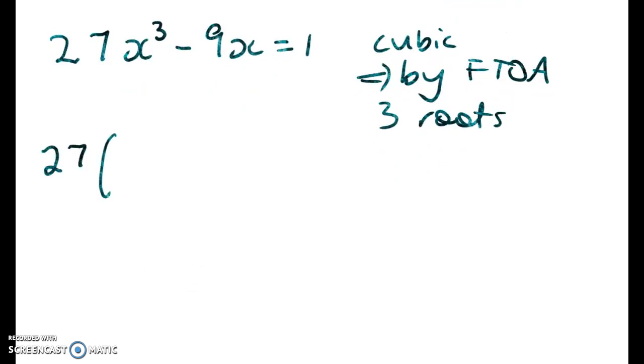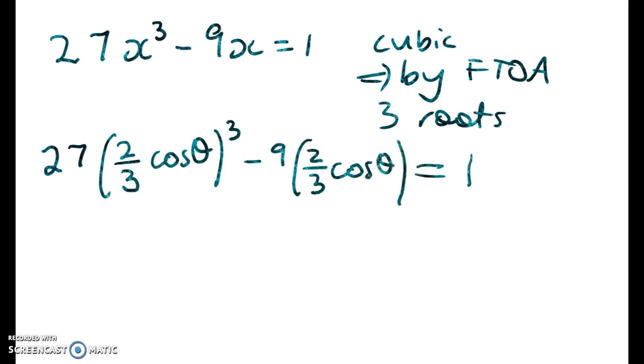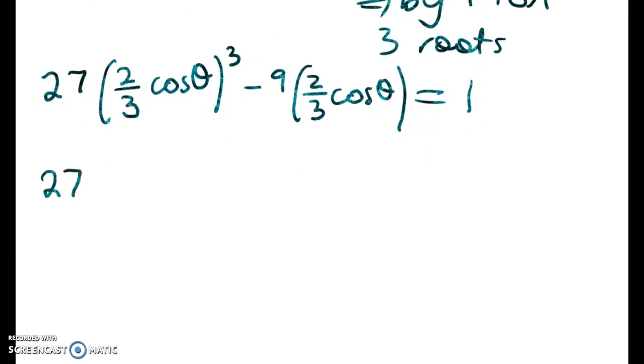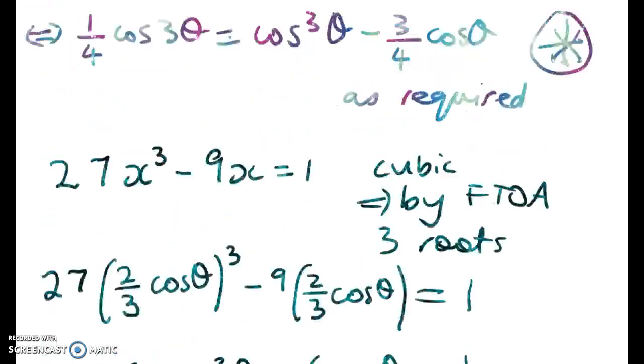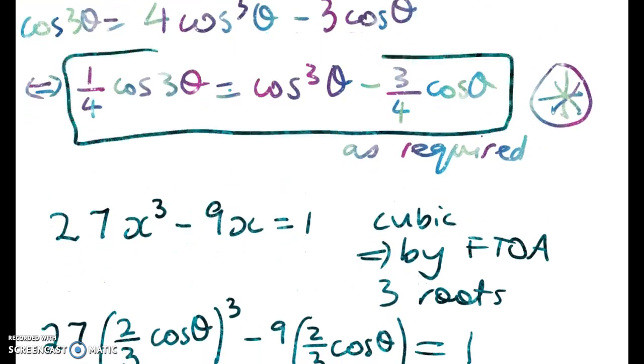So let's do the substitution now and work that through. So it's 27 times 2 thirds of cos theta cubed minus 9 times that equals 1. Right, so 27 times 8 over 27 cos cubed theta minus 6 cos theta equals 1. Simplifying out the 27 gives me this. So we're sitting here looking at this and going, oh, I've still got a cubic. But remember that it said hence. So we've got to use what we had up above. So it's time to go back and look at what did we get to.